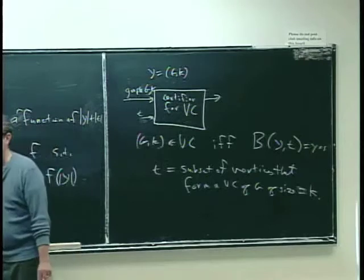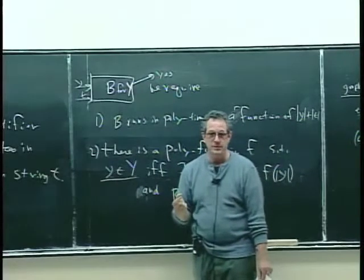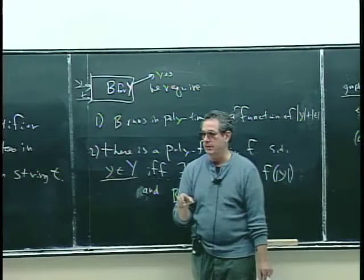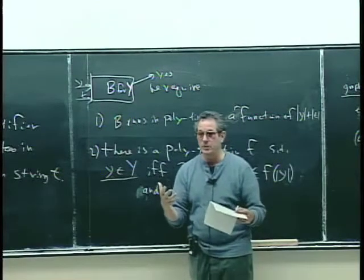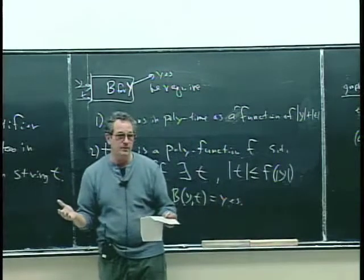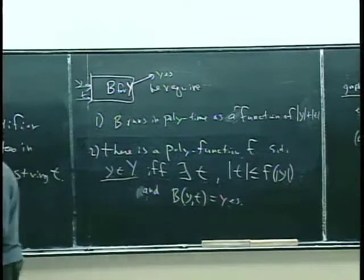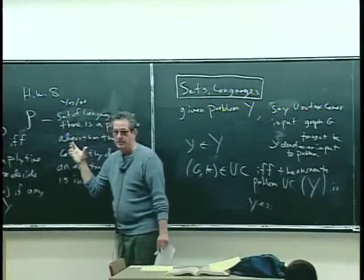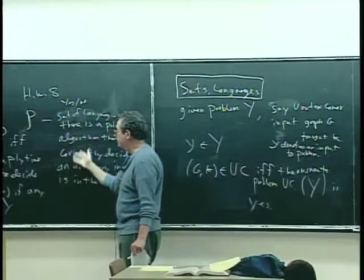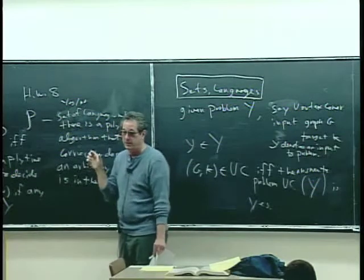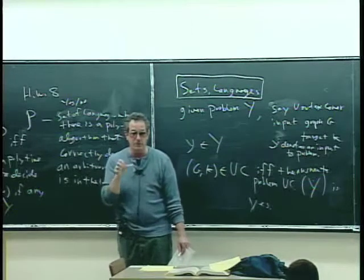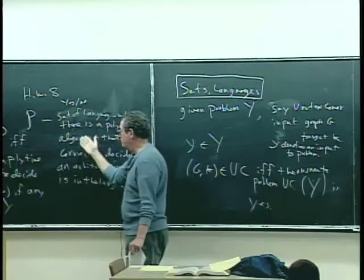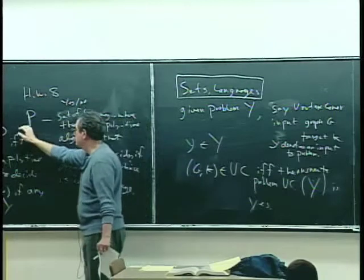The example I gave you last time was primality. Primality is the problem where you're given a number, an integer, and you want to know whether it's prime. You can think of the language as the set of prime numbers. The decision question is: given that number, is it prime? If there's an algorithm that can take in that number and run in polynomial time as a function of its input size — in terms of the number of bits — then primality is in capital P.